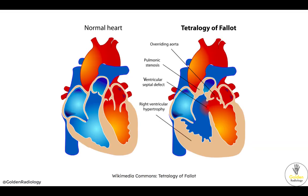Looking at the cartoon of a normal heart versus a Fallot heart, we can see all four components: pulmonary stenosis, right ventricular hypertrophy, overriding aorta, and ventricular septal defect. The overriding aorta sits right at the level of the VSD, meaning blood going through the VSD can go straight into the aorta. In order for blood to leave the right ventricle, it has two paths: through the stenosed pulmonary artery or through the VSD. The more stenosed the pulmonary artery, the more resistance, so blood takes the path of least resistance through the VSD, bypassing the pulmonary circulation and increasing cyanosis.